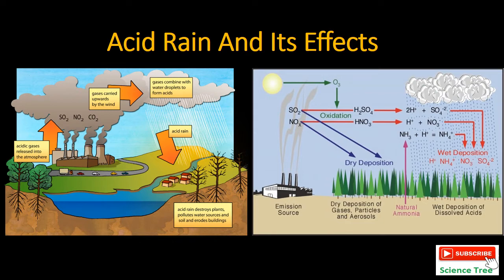These acidic gases release into the atmosphere and are carried upward with the help of wind. The gases combine with water droplets to form acids and come to the earth in the form of acid rain. These gases come from combustion of fossil fuels, from industries, vehicles, and many other human activities.